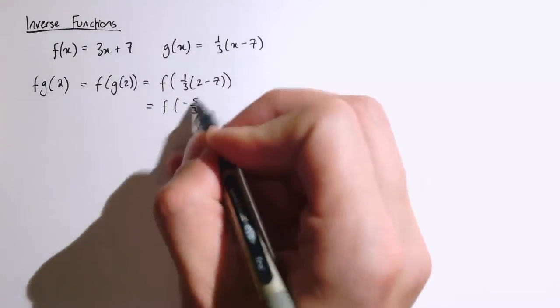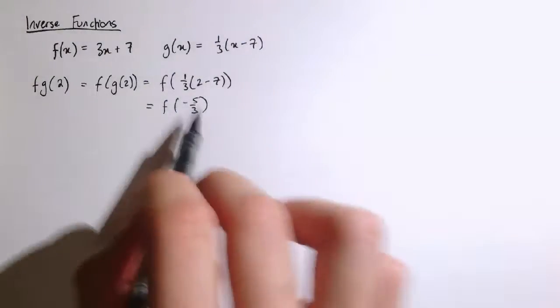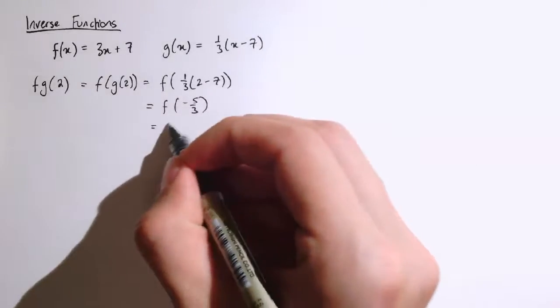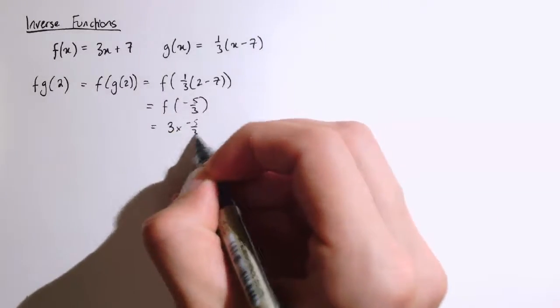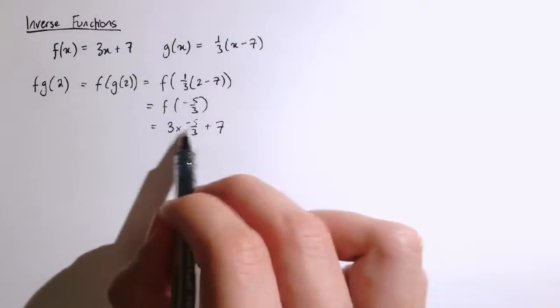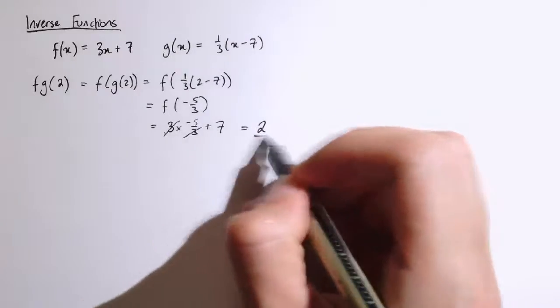So this is minus 5 thirds. And now I'm going to put minus 5 thirds into 3x plus 7, so I get 3 times minus 5 thirds plus 7. The 3's cancel out here, so we just get minus 5 plus 7, which is 2.